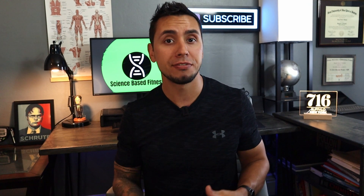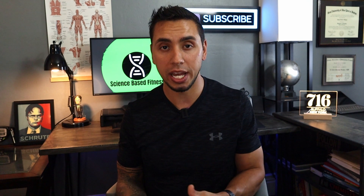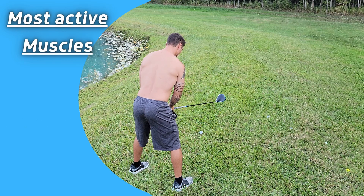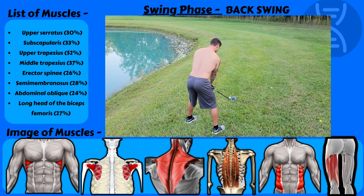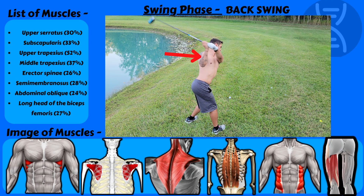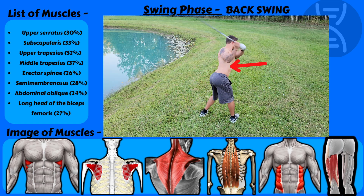Now let's look at the most active muscles during the swing across its different phases. The first phase is the backswing. In this movement, the upper serratus, middle and upper trapezius, and the subscapularis are the most active in the upper body. In the lower body and core, the erector spinae, obliques, semimembranosus, and both the long head and short head of the biceps femoris are most active.